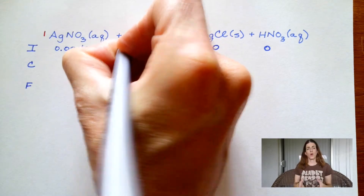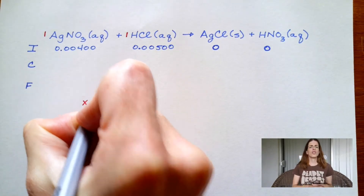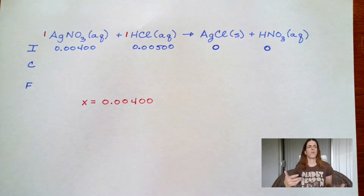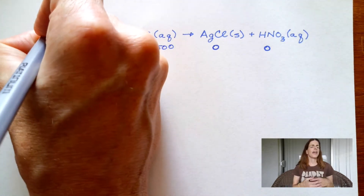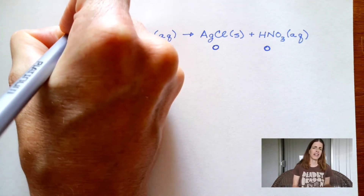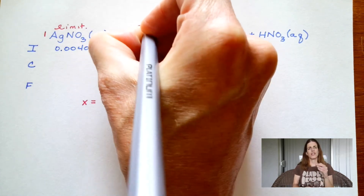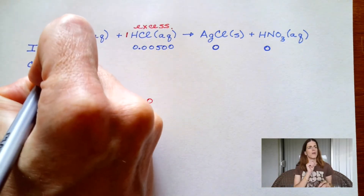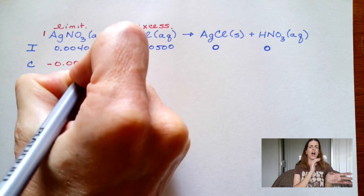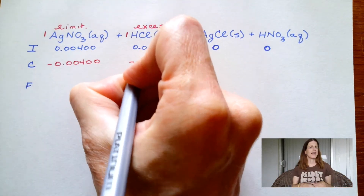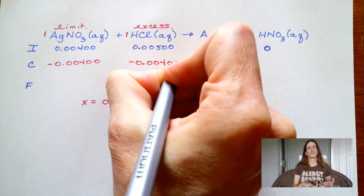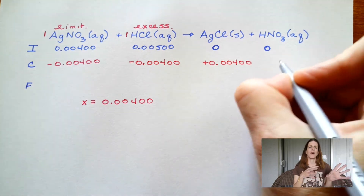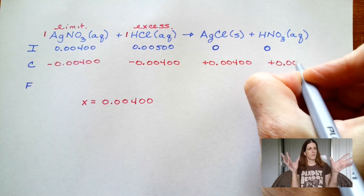I kind of take a shortcut on this particular problem. Usually I go ahead and solve for X for both reactants; however, since all the coefficients are 1, 1, and 1, I could just see that silver nitrate was the limiting reactant. So I chose the initial moles of silver nitrate to be my X value and started plugging that directly into my change line. I could get away with these shortcuts because the coefficients were all 1, but if it was a different coefficient I'd probably set it up in its entirety.